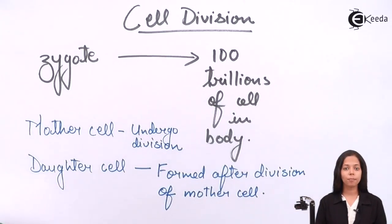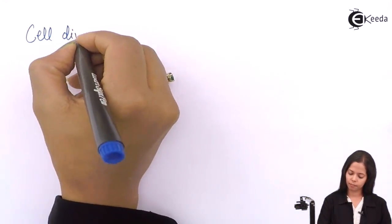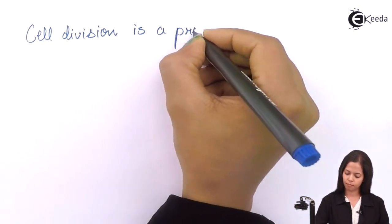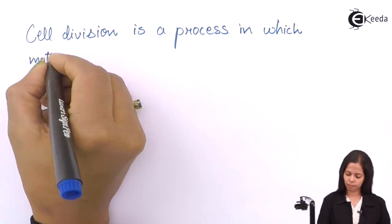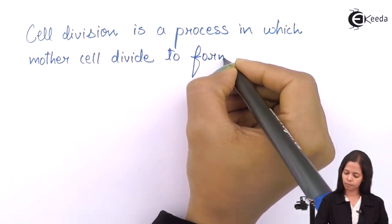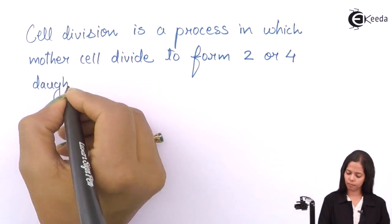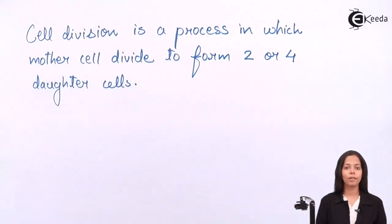So basically what is the meaning of cell division? Cell division is a process in which mother cell divides to form two or four daughter cells. So this is the meaning of cell division.